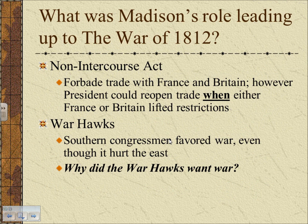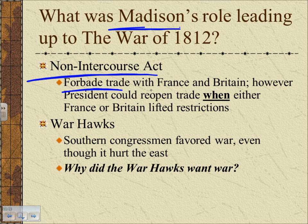Madison shared Jefferson's view of America and also engaged in sidestepping trade, trying to pressure France and England by cutting off trade. He instituted the Non-Intercourse Act, which forbids trade with France and Britain. However, the difference between this and the Embargo Act was a clause that said when either France or Britain lifted their restrictions, we would renew trade with them — so the outlet was always open.